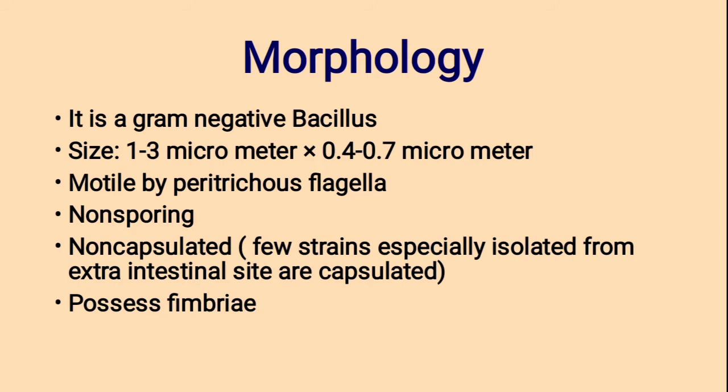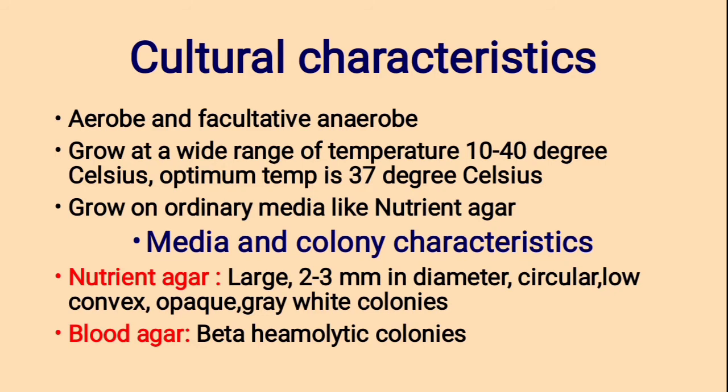Cultural Characteristics. Escherichia coli are aerobic and facultative anaerobic. Facultative anaerobic means facultative — something optional — that can use oxygen but also has anaerobic methods for energy production; it can survive in either environment. They grow at a wide range of temperatures from 10 to 40 degrees Celsius, with an optimum temperature of 37 degrees Celsius.